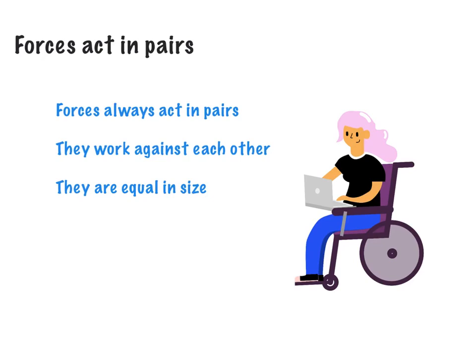Let's consider the case of this girl sitting in a wheelchair. We have lots of different things going on but essentially zero motion, so we're talking about balanced forces. She is pushing down with her weight — we know her weight equals her mass times acceleration due to gravity — which means the chair she's sitting in is also pushing up with the same force.